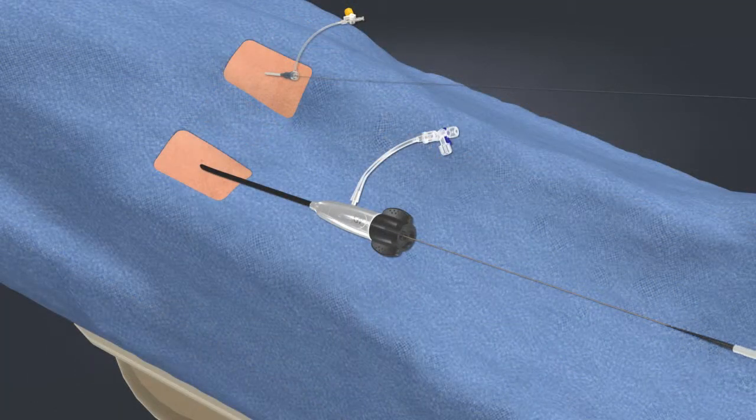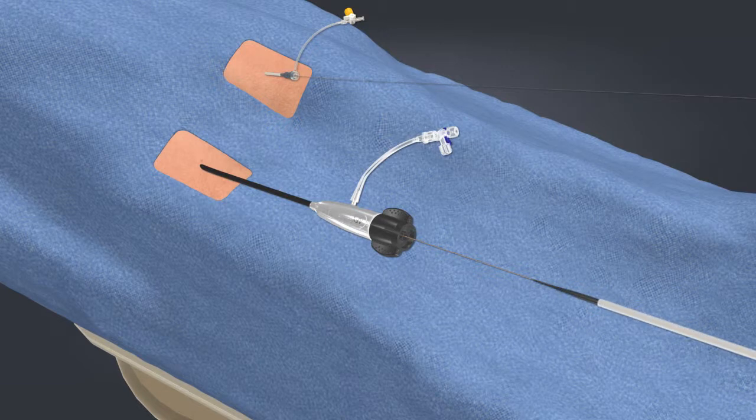Load the bifurcated delivery system onto the 0.035 guide wire.